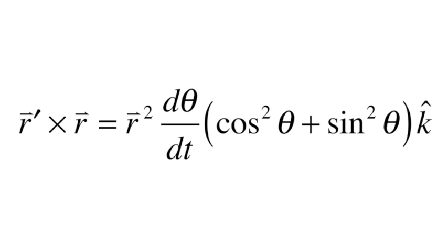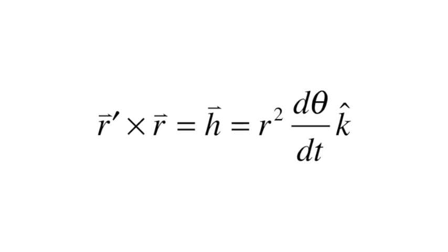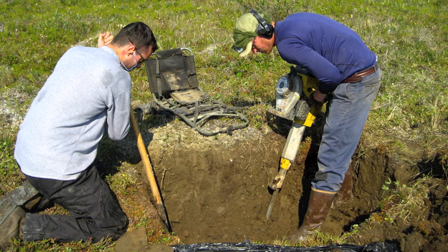After crossing the two vectors and simplifying using simple trigonometric identities, it is found that r cross r prime, which is equal to h, is equal to r squared dθ/dt in the k-hat direction.